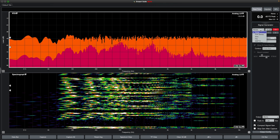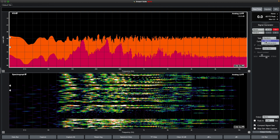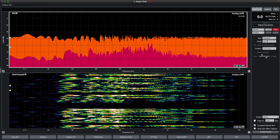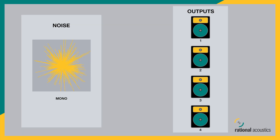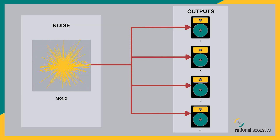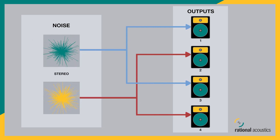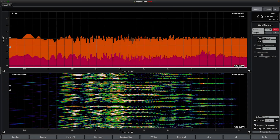Noise signals are offered as random or pseudo-random — in other words, infinitely non-repeating or cyclical. Random noise uses the pink contour and has options for playing mono or stereo. With mono selected, the same noise signal is sent to all selected outputs. With stereo selected, all even channels get one random noise signal and all odd channels get a different random noise signal, sometimes referred to as uncorrelated noise.